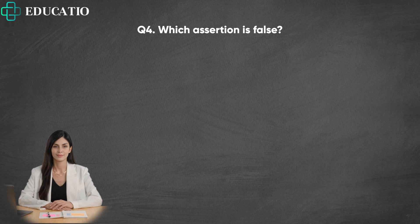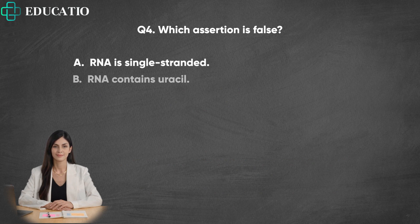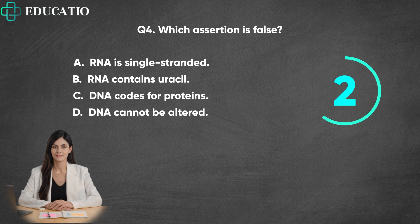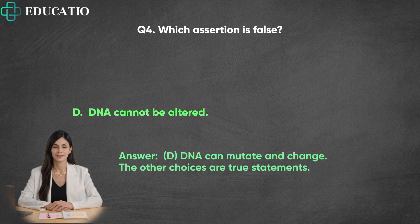Question 4. Which assertion is false? A. RNA is single-stranded. B. RNA contains uracil. C. DNA codes for proteins. D. DNA cannot be altered. Answer: D. DNA can mutate and change. The other choices are true statements.